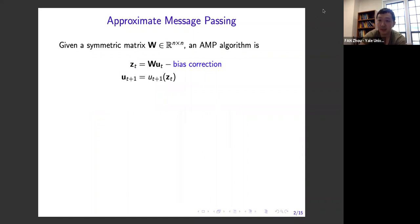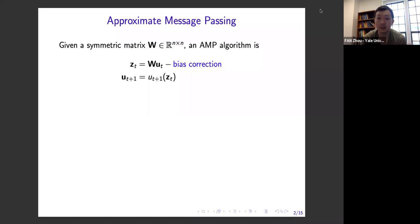The version of AMP that I'll talk about today is just the simplest symmetric square version. What's usually meant by an AMP algorithm is something of the following form: I take an iterate u_t, I multiply by a given symmetric matrix W, and then I subtract from this product W times u_t some correction or bias to get an iterate z_t. Then to z_t I apply some non-linear function, entry-wise, to get the next iterate u_{t+1}.